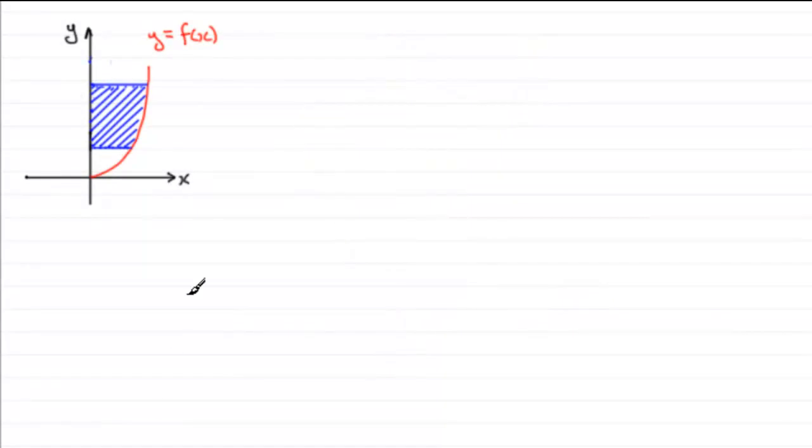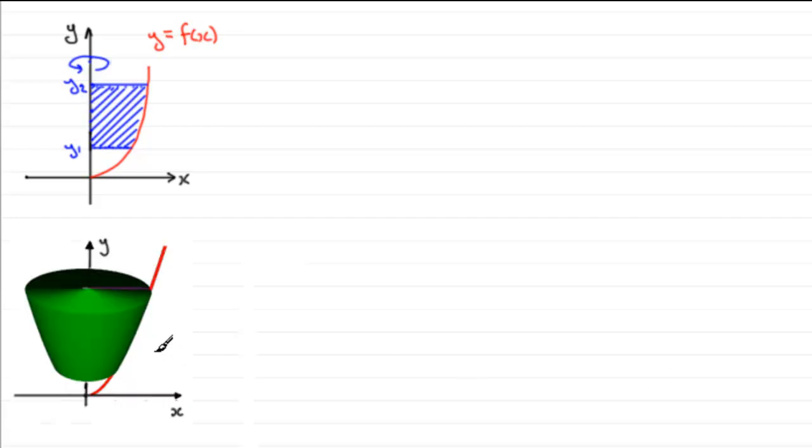Now suppose we had a curve then of the form y equals some function of x. And we took an area bounded by the y-axis, the curve, and the lines say y equals y1 and y equals y2. Then if we were to spin this area around the y-axis we're going to generate a solid of revolution something like this.